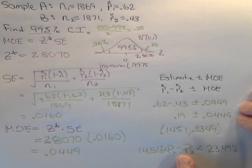Again, the difference of the two proportions is between 14.51% and 23.49%.